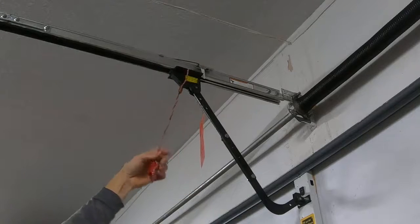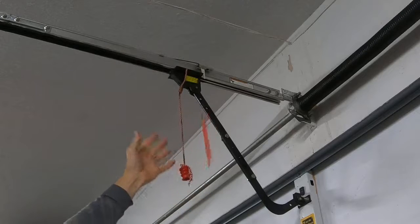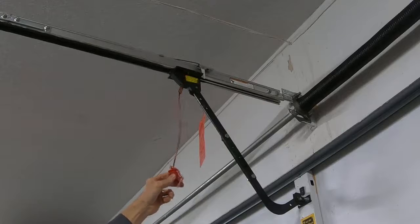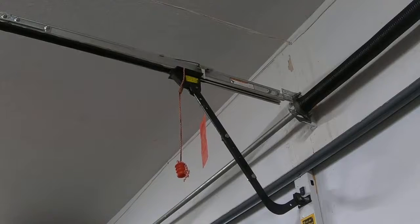In order to disengage it, you just pull this down. So that's the emergency release there. If your power is out and you need to get out of your garage, you pull this down and that allows the garage door to be lifted manually.